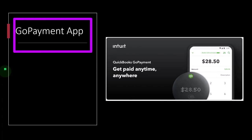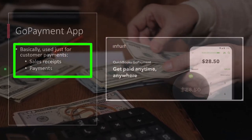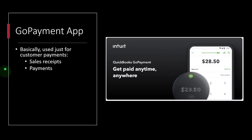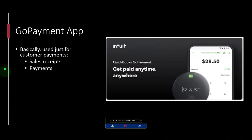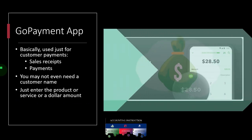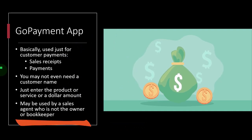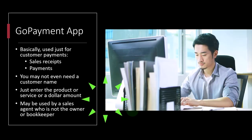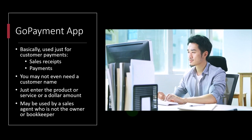The GoPayment app is designed specifically for payments. It's good not just for owners but also for employees or salespeople where you don't want to give them full QuickBooks access — just the ability to collect payments into your QuickBooks account. It's simpler: just enter the product, service, or dollar amount. You may not even need a customer name. It can be set up for sales agents who are not the owner or bookkeeper, giving them payment collection capability only.